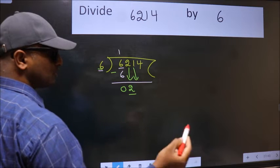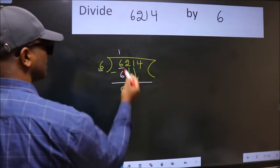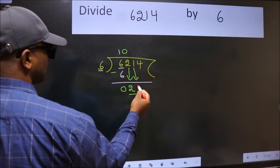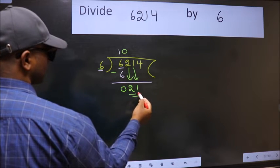And the rule to bring down the second number is put 0 here. Then only we can bring this number down. So 21.